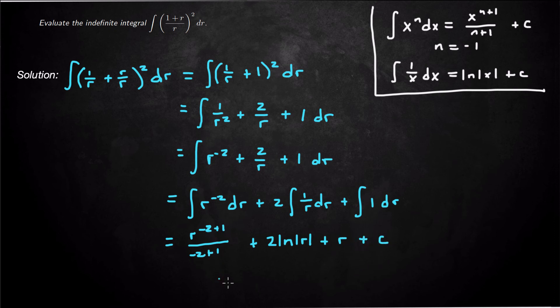And then all we have to do is simplify that first term. So negative 2 plus 1, that's just negative 1. So actually it's 1 over negative 1, which is just negative 1 times 1 over r, plus 2 natural log absolute value of r, plus r plus c.